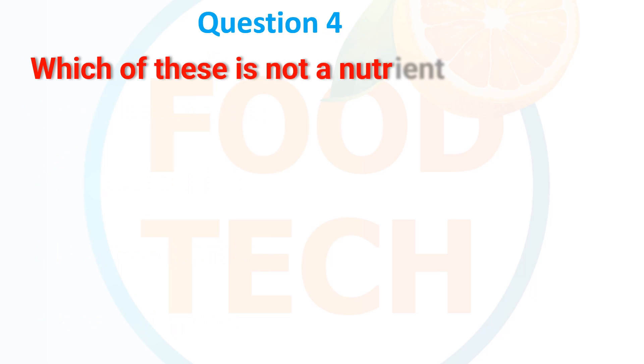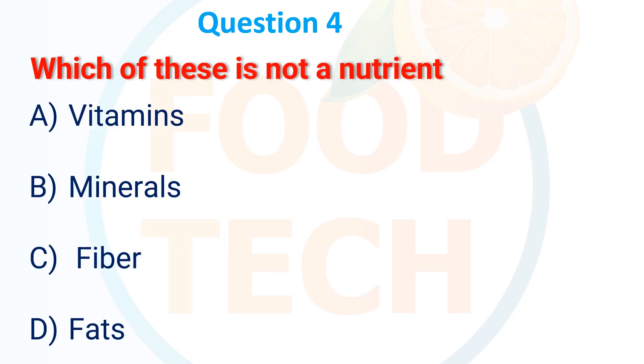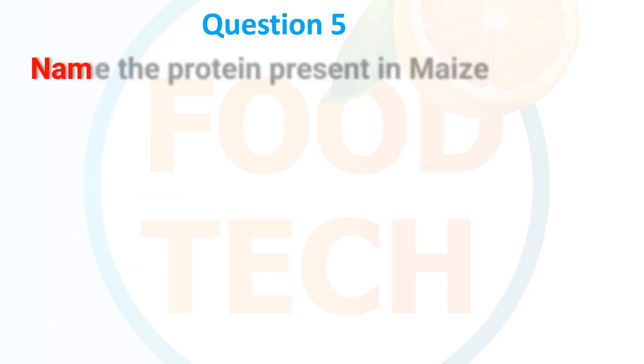Question 4: Which of these is not a nutrient? A. Vitamin, B. Minerals, C. Fiber, D. Fat. The answer is C. Fiber.